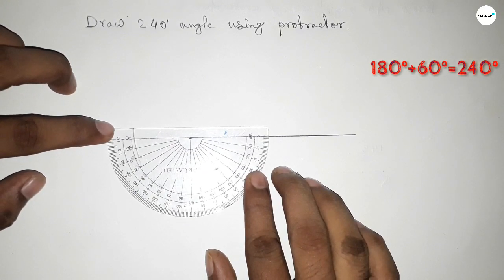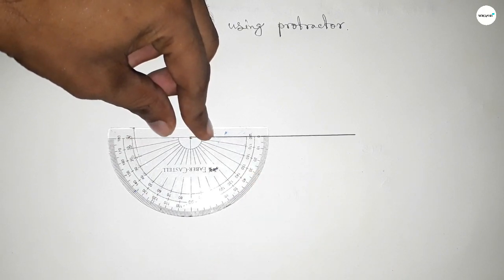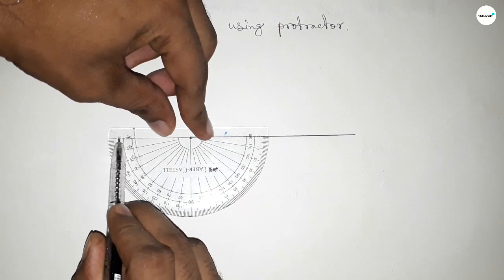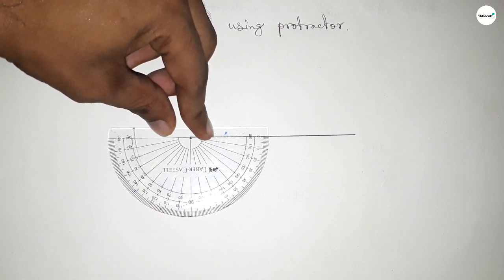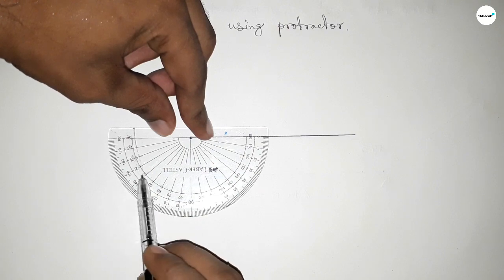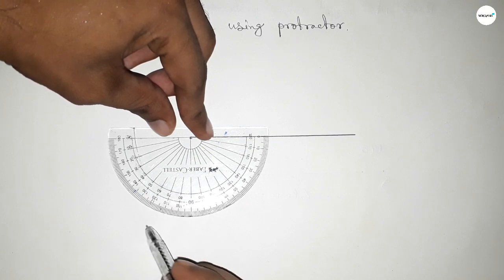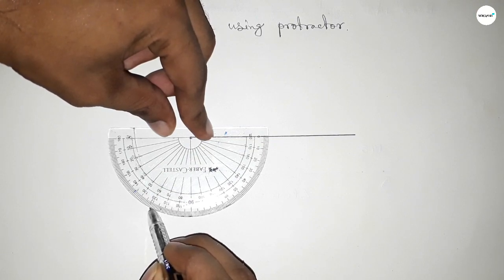For 240 degrees, putting the protractor this way, then counting the angles. This is 180 degrees. Now we have to add 60, so this is 10, 20, 30, 40, 50, and this is 60. By adding 60 with 180, we can get 240 degrees.